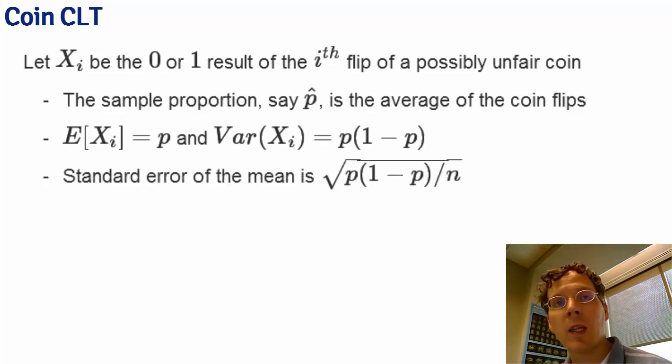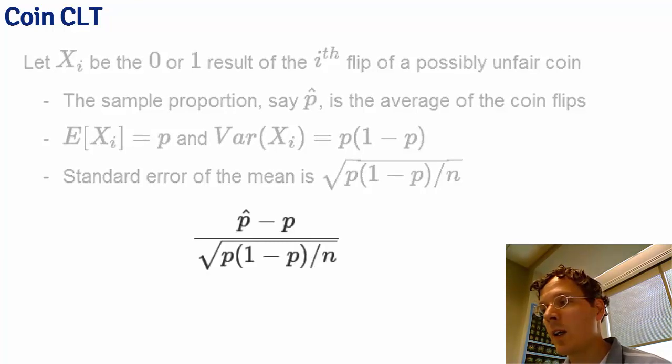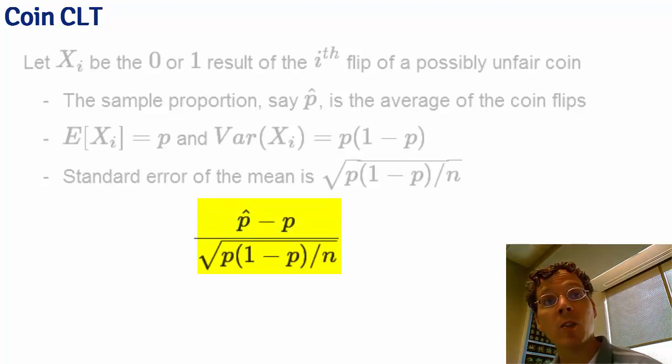Then the standard error of the mean, or the standard error of the proportion of heads p-hat, is square root p times 1-p over n. So if we take the statistic p-hat, subtract off its population mean, and divide by its standard error, square root p times 1-p over n, that should be approximately normally distributed if n is large enough.